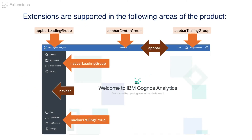Extensions are supported in the following areas of the product. You can extend the app bar in the app bar leading group, app bar center group, or app bar trailing group. And you can extend the nav bar in the nav bar leading group or the nav bar trailing group.